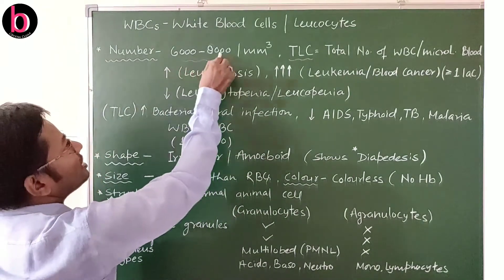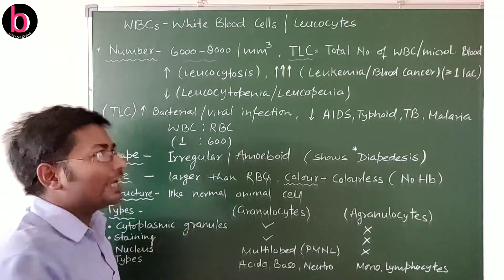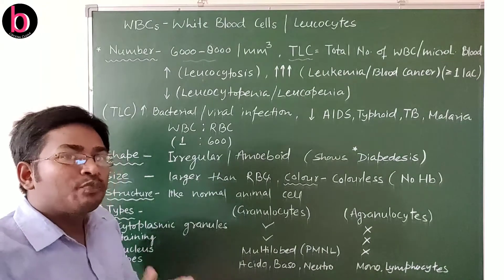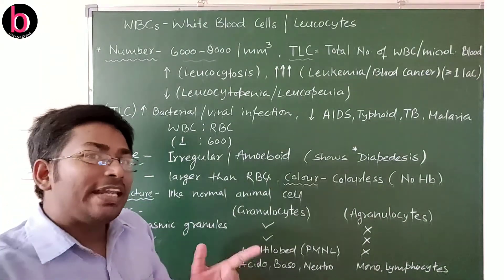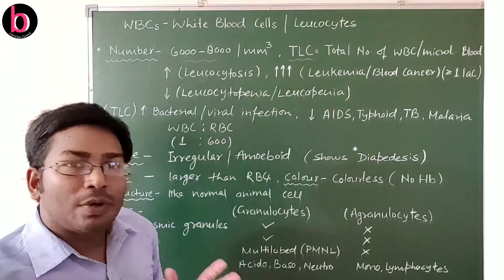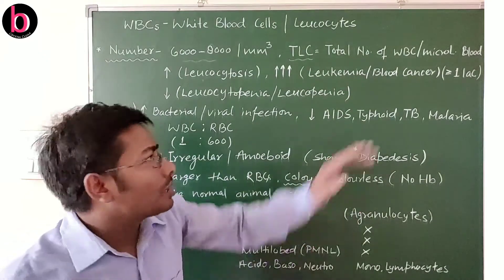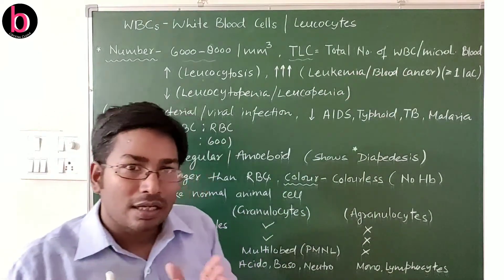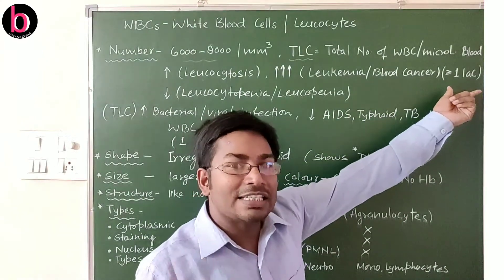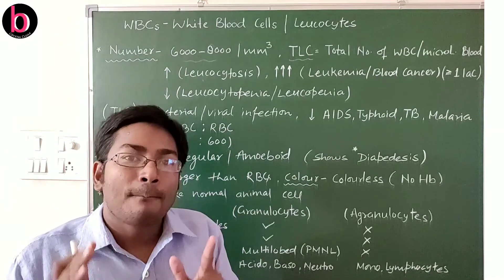Sometimes there will be an increment in the number of WBCs. This increment with respect to the normal range of 6000 to 8000 per cubic millimeter is known as leukocytosis. In some cases there may be a very high increase in the number of WBCs — this is known as leukemia or blood cancer.